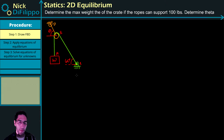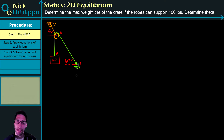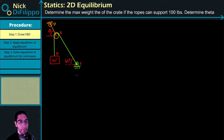We're going to approach this problem just like we've approached any equilibrium problem. First, we are going to draw a free body diagram. Then we are going to apply the equations of equilibrium, solve the equations of equilibrium, and we should get what we're looking for. So let's draw the free body diagram.